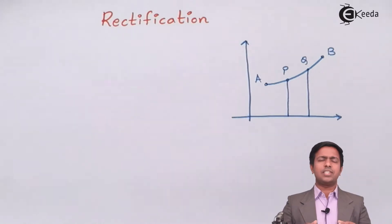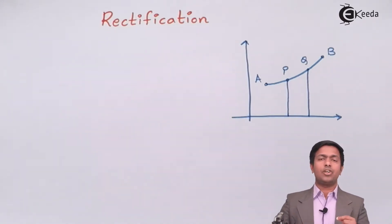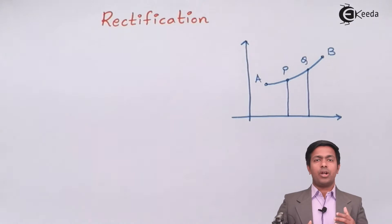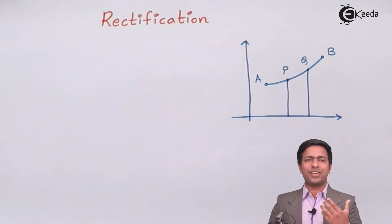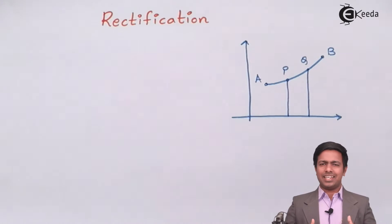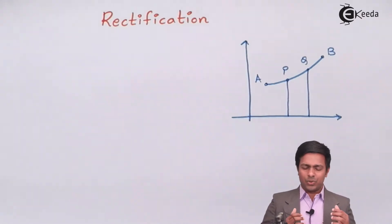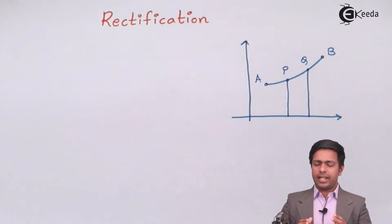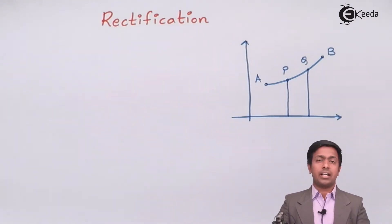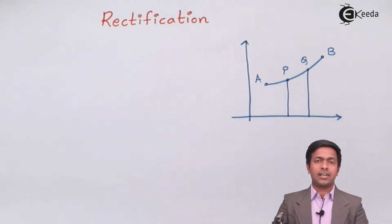Rectification is basically used to find out the length of a curve, or the length of arc of a given curve. To understand the concept and derive the formula, let's take one diagram with a small arc and try to find out the length of that arc.